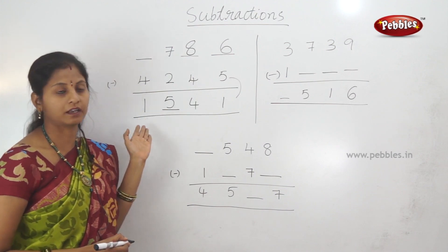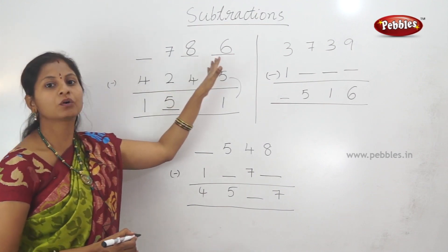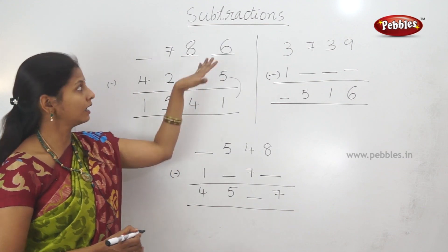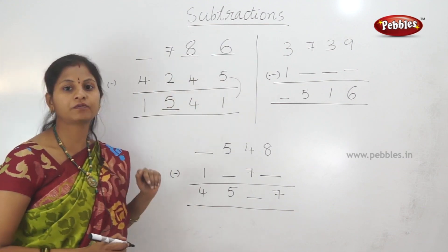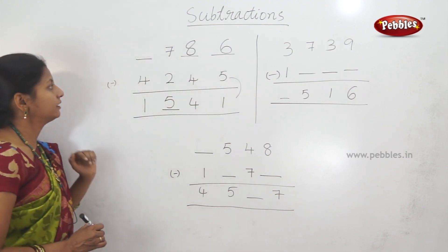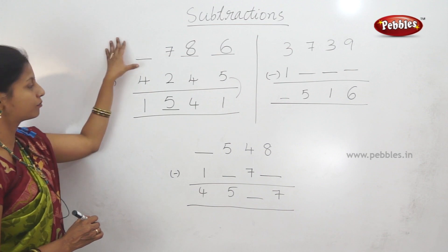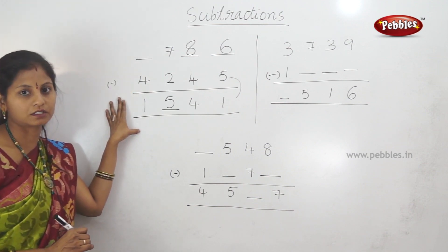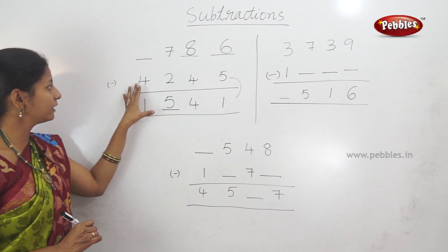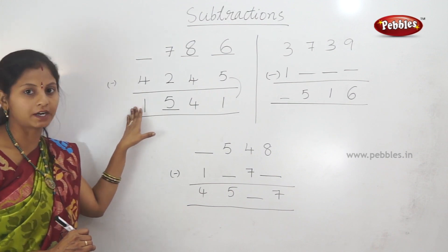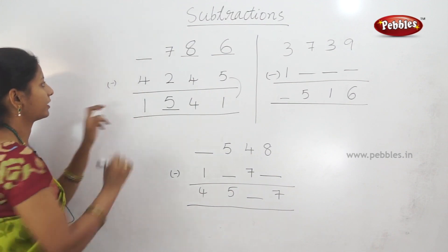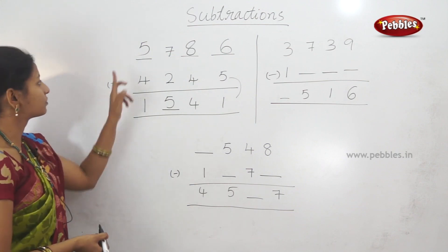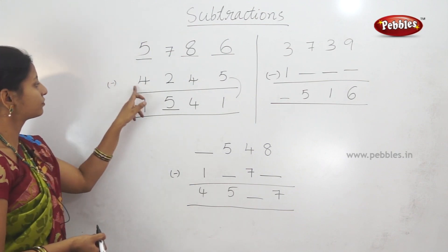7 minus 5. But here we have to find bigger numbers — we will find out the missing numbers. Next. Here, there is no bigger number. Smaller number, so we will find out the answer. We will find out the same numbers. 4 plus 1 is 5. So, 5 minus 4 is 1.